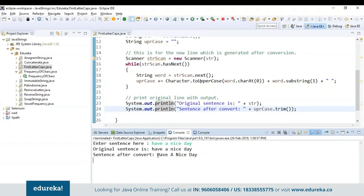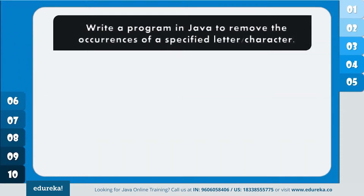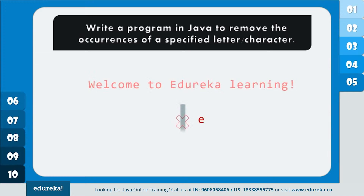The next program says: write a program in Java to remove the occurrences of a specified letter or character. In the given statement, say I want to remove the specified character 'e'. I have used a removeChar method and passed parameters as string s and char c. I have initialized the count to 0, and here I am creating a new character array for the string and initializing variables i and j to 0.